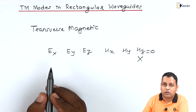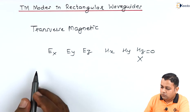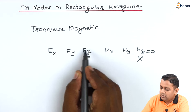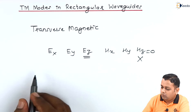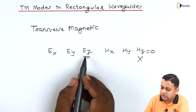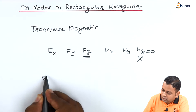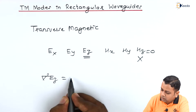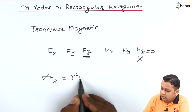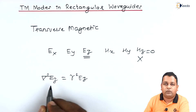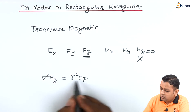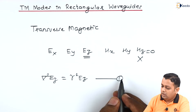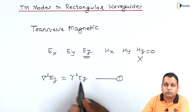In the previous videos we established the Helmholtz equation in the form of a wave equation. Corresponding to the z-component of the electric field, Ez, we have: del-squared Ez equals gamma-squared Ez. Let us call this equation number one. The solution to this equation will be found in this topic.